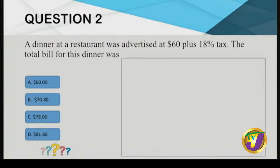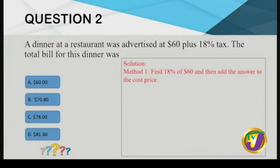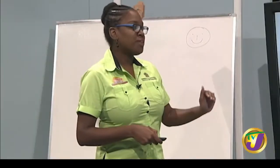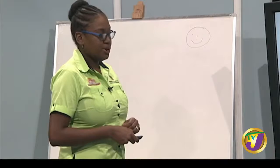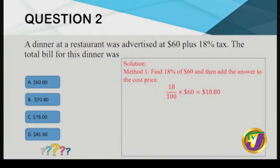There are two methods. Method one: find 18% of $60 — that is $10.80 tax — then add it to the original cost of $60, giving a total bill of $70.80. Method two: since 100% is the cost of the dinner and we're adding 18%, we calculate 118% of $60, which gives you the answer right away.